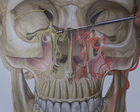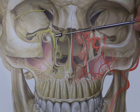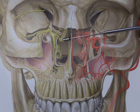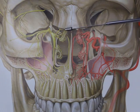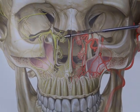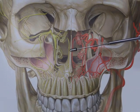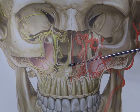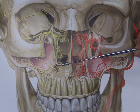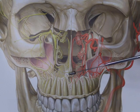including posterolateral nasal branches that supply the nasal sidewall, as well as the nasopalatine nerve that supplies the nasal septum and the hard palate.